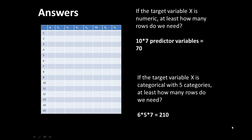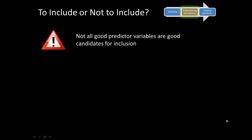Another important consideration is whether or not to include a particular variable as a predictor variable — that is, what are good predictor variables? The point is not all good predictor variables are good candidates for inclusion. This might sound a little paradoxical, meaning we're saying this is a really good predictor variable, why shouldn't I include it in the model? It doesn't make sense to not include it in the model, at least at the outset.